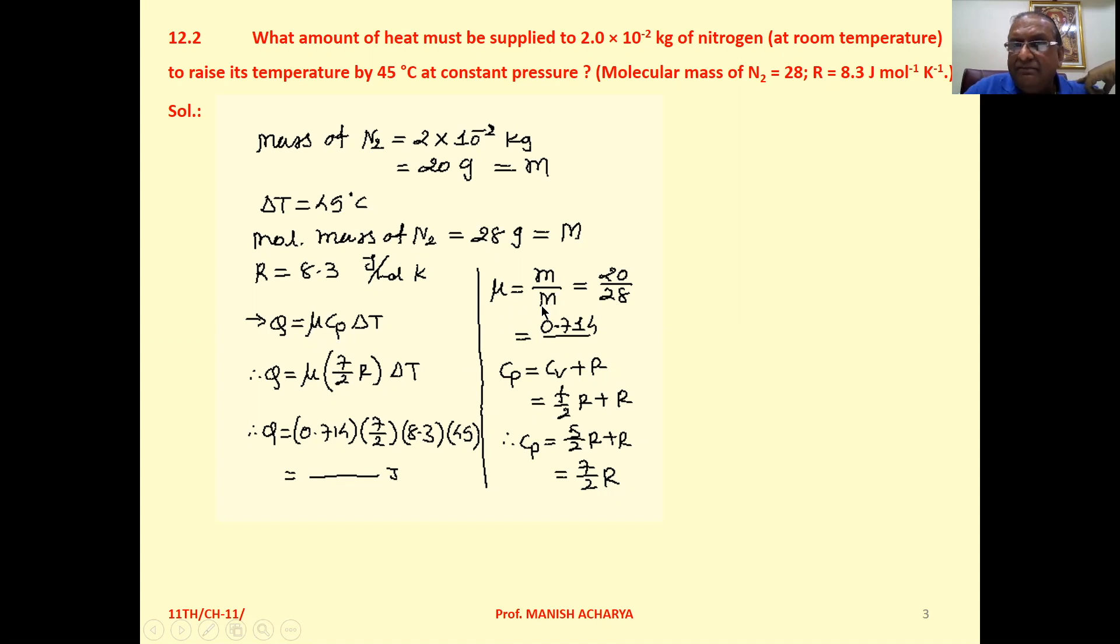Now μ we have to calculate first. So μ = m/M, given mass upon molecular mass, which is 20/28. Now you have μ, then Cₚ = Cᵥ + R, because Cₚ - Cᵥ = R. Cᵥ = (f/2)R where f is the degrees of freedom.